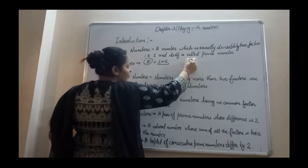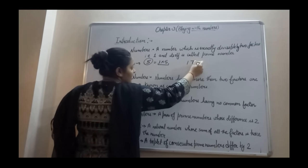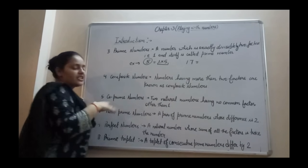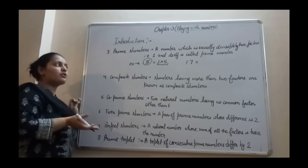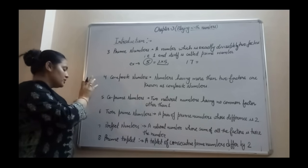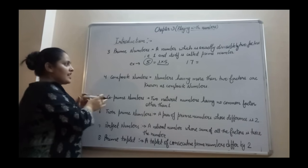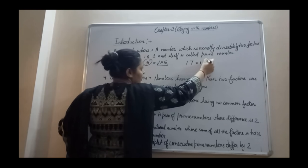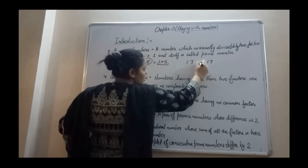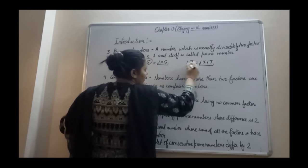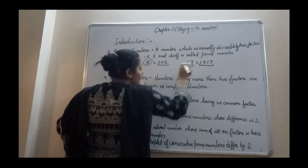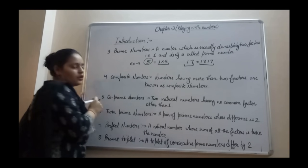Similarly, 17 will not appear in the multiplication table of any other number. So 17 has factors 1 and 17 only — that is 1 into 17. So 17 is also a prime number.